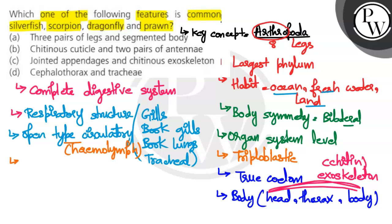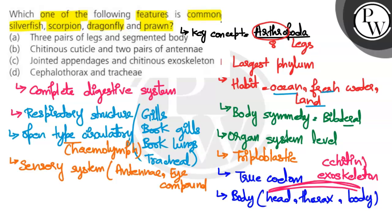If we talk about the sensory system, there are antennae present, compound eyes, and statocysts — which we call the balancing organ.